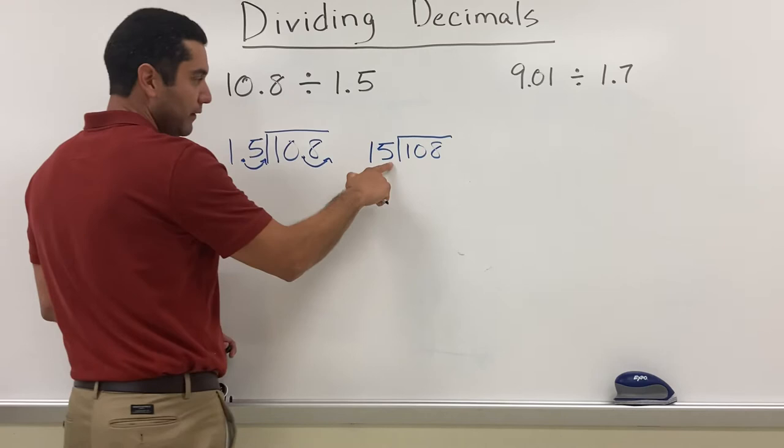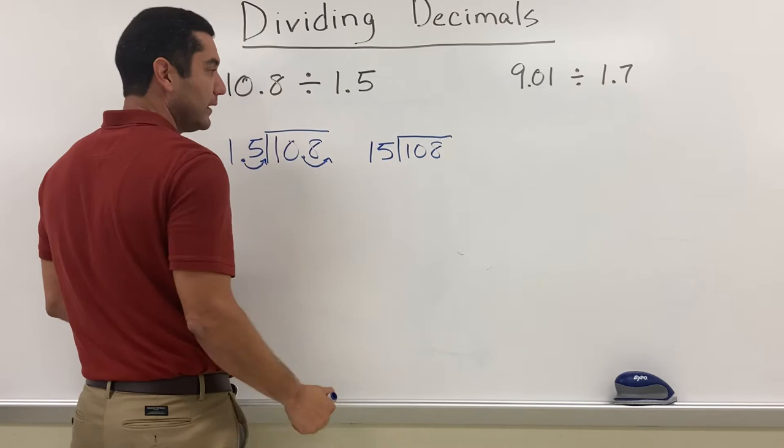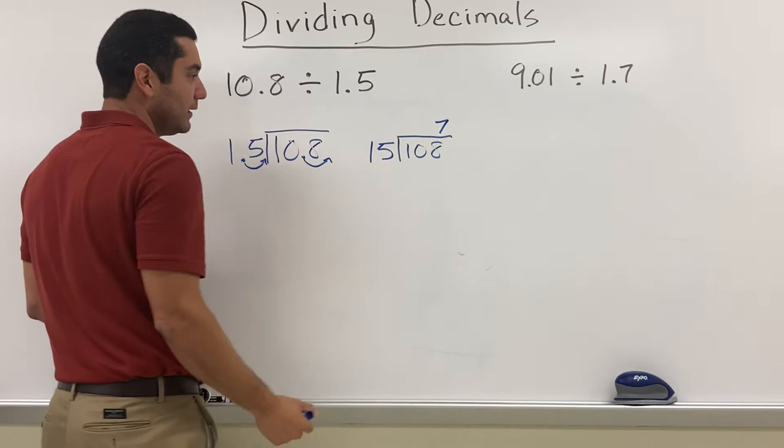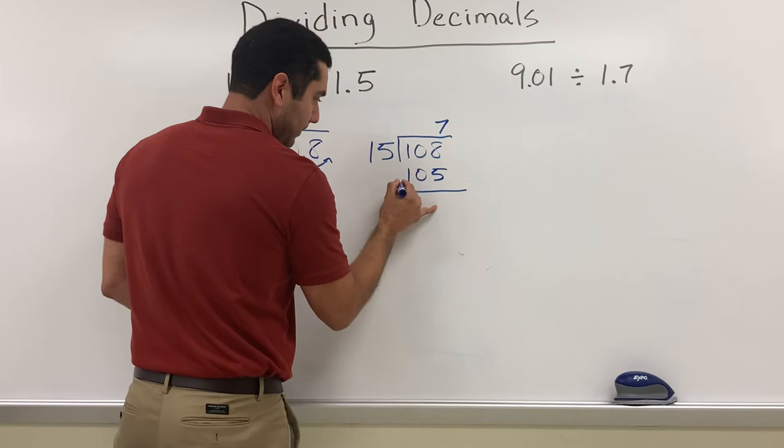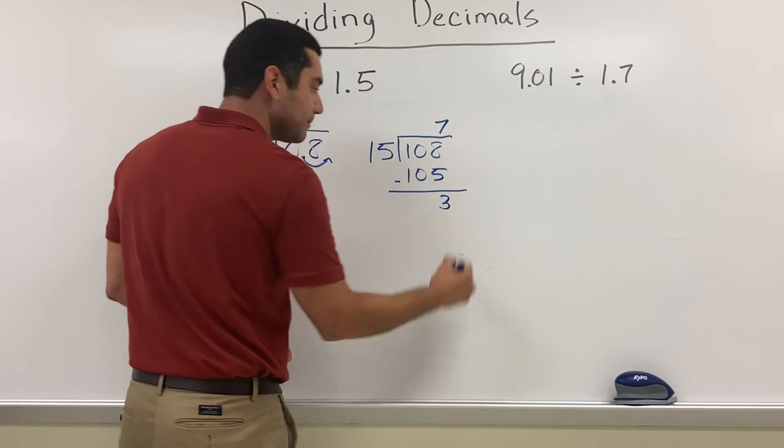15 can't go into 1, it can't go into 10, but it can go into 108 exactly seven times. So I already calculated 15 times 7 - it's going to give me 105. I subtract: 108 minus 105 gives me 3.